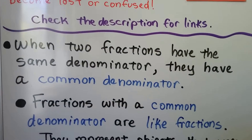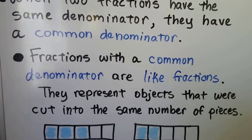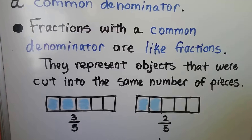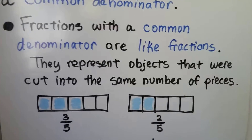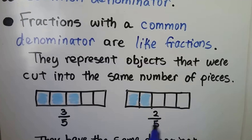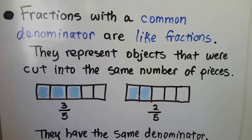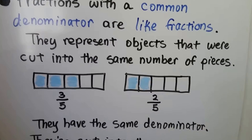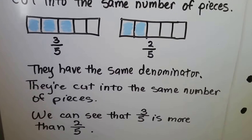When two fractions have the same denominator, they have a common denominator, and fractions with a common denominator are like fractions. They represent objects that were cut into the same number of pieces. So if we have two candy bars and both were cut into five pieces, they each have fifths. If you eat three-fifths and I only eat two-fifths, you ate more than I did. It's easy to compare them because the denominators are the same — they're like fractions, cut into the same number of pieces. We can see that three-fifths is more than two-fifths.